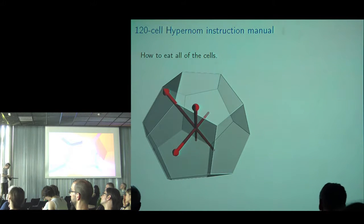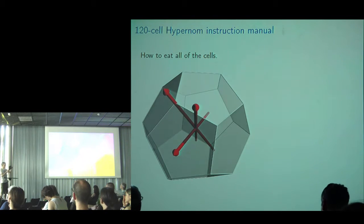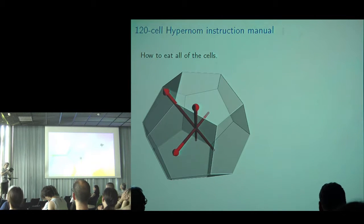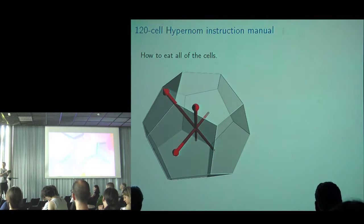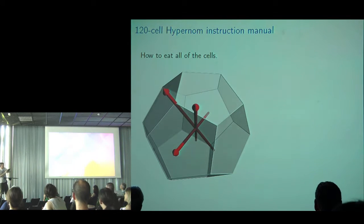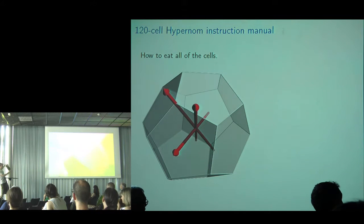The aim of the game: when you get close to a dodecahedron, it disappears — you eat it. This is four-dimensional Pac-Man. The aim is to eat all of the cells, and that's where the name Hypernon comes from — 'hyper' for hypersphere, and 'nom' for eating. Winning the game means getting your iPad to every possible orientation twice, because of the double cover.